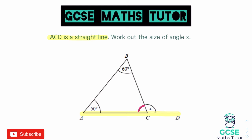So if we can find the angle in the triangle, we'll be able to find angle X because angles on a straight line add up to 180. When it comes to angles in a triangle, angles in a triangle also add up to 180 degrees. So we've got a couple of rules to use in this question — angles in a triangle and angles on a straight line.